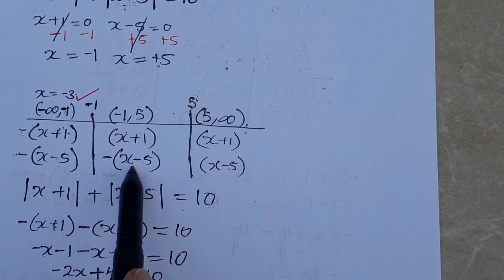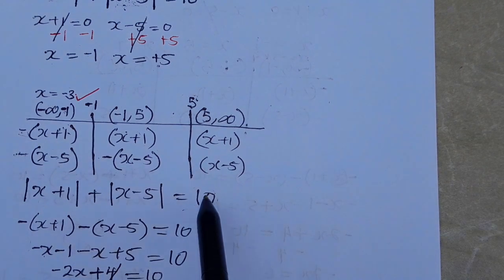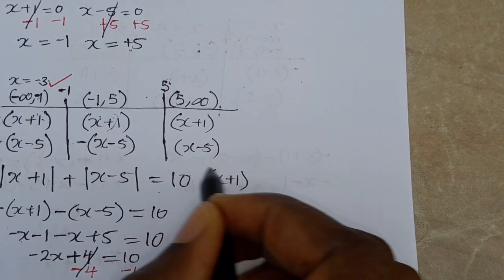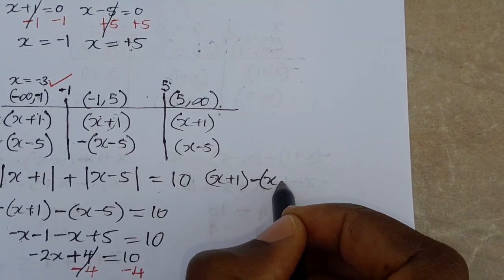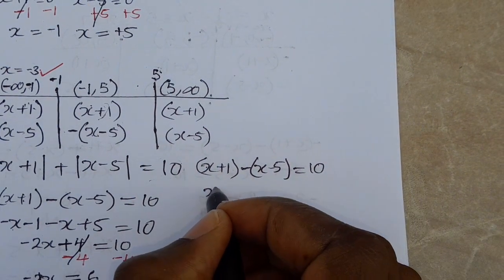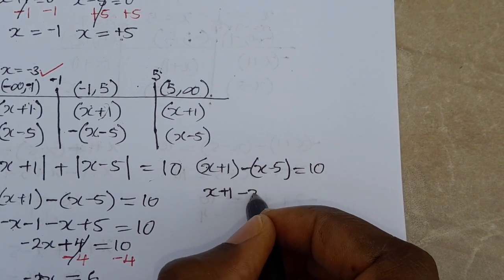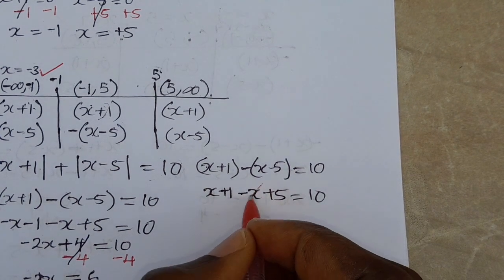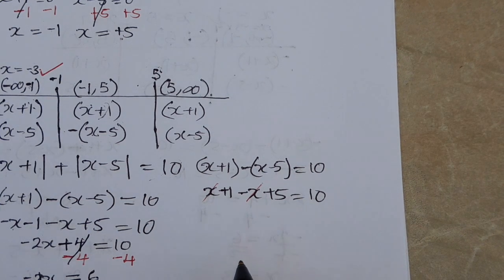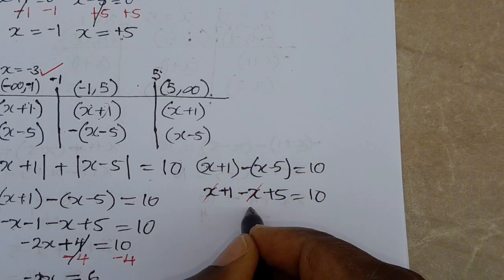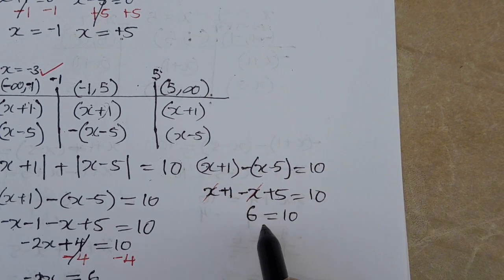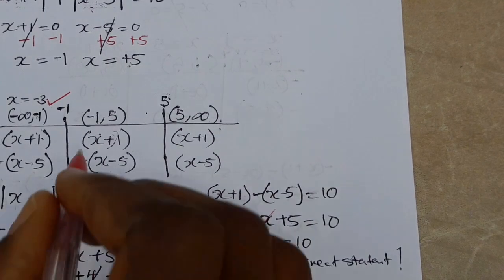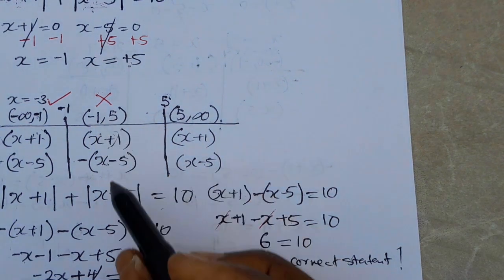For the second interval, we use positive (x plus 1) minus negative (x minus 5) equals 10. This gives x plus 1 plus x minus 5 equals 10, which simplifies to 6 equals 10. This is not a correct statement, so there is no solution in this interval.